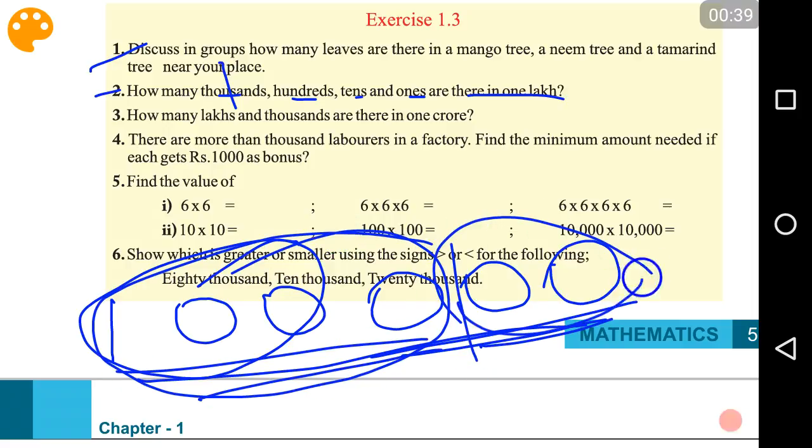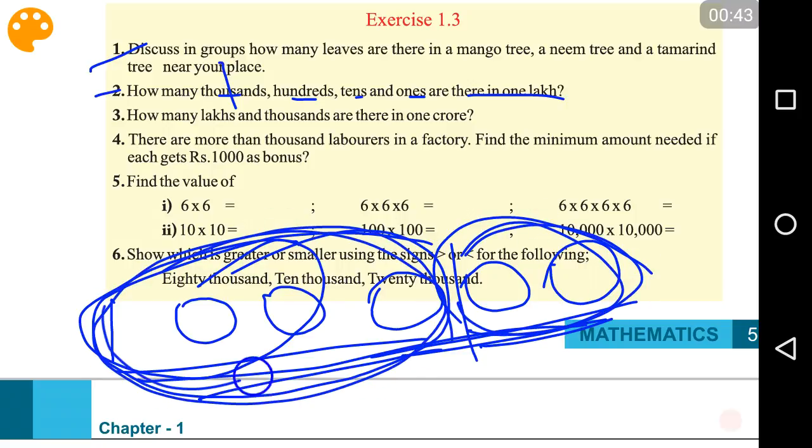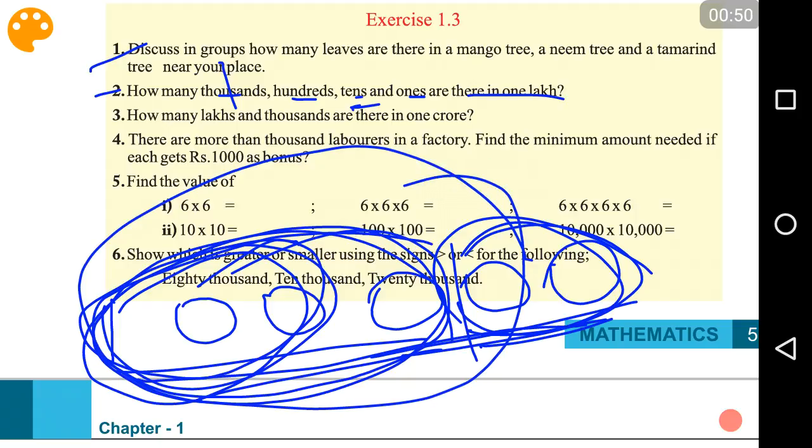This is hundred, right? Two zeros gives us the hundred. So thousand hundreds, hundred thousands. How many tens are there? How do you have to circle? You have to circle like this. This is ten thousand. Ten thousand tens and we have one lakh ones.